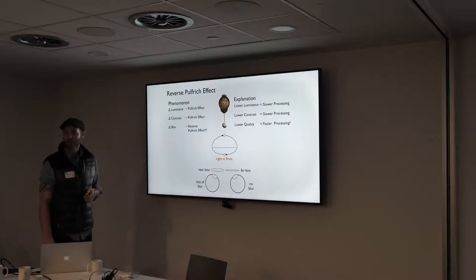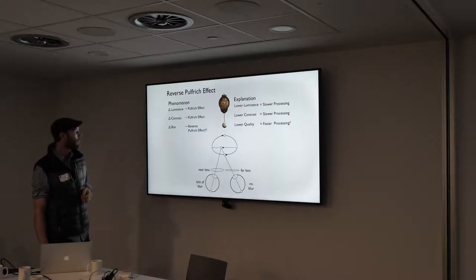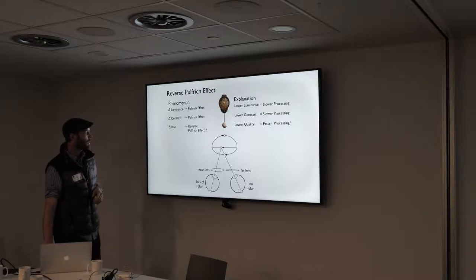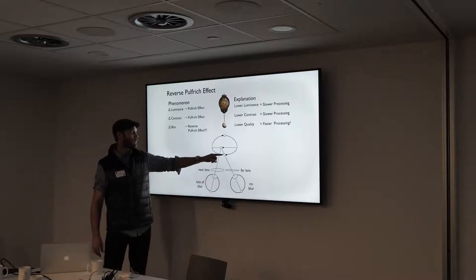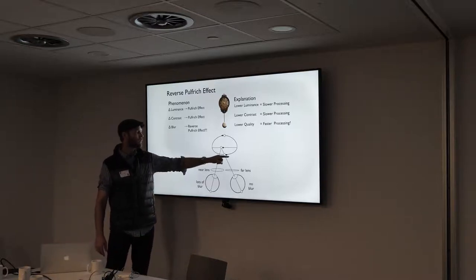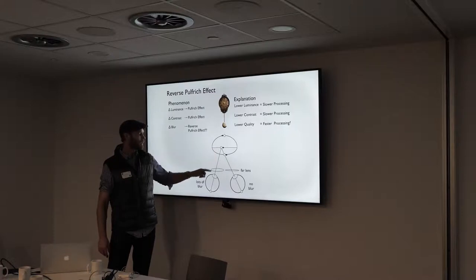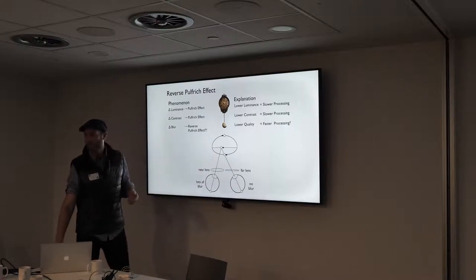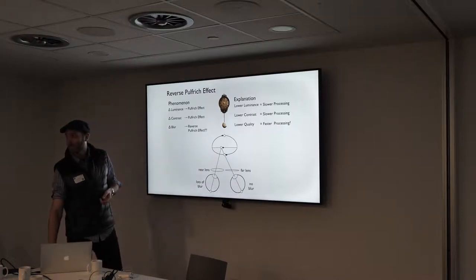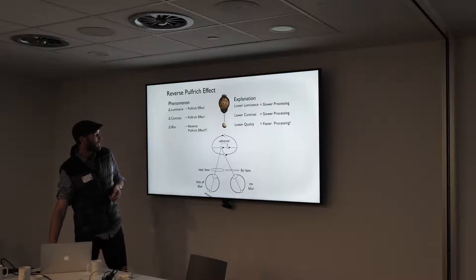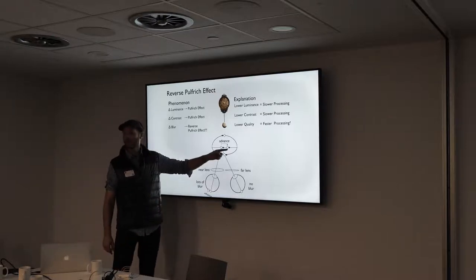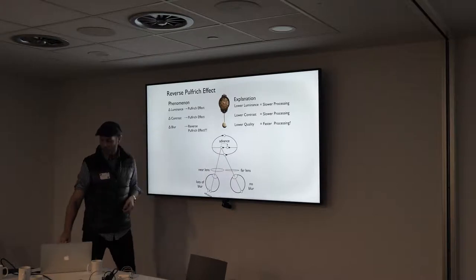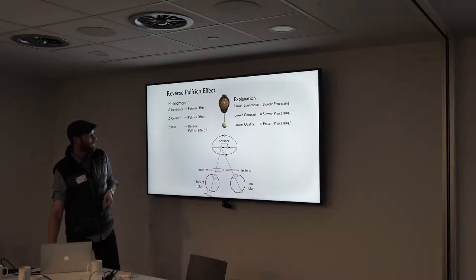That of course seems like a paradox. When you see it moving front-right, if the blurry image is processed faster — advanced relative to the sharp image — that causes an advance of the position, which is why you see it in front of the screen.